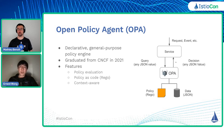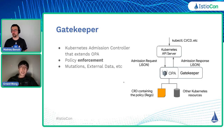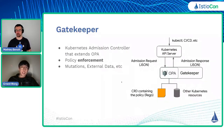Let's look at the relationship between OPA and Gatekeeper. Gatekeeper is a Kubernetes admission controller that extends OPA, and it is responsible for policy enforcement based on the evaluation results from OPA. An admission controller intercepts admission requests to the Kubernetes API server, giving us an opportunity to evaluate objects being admitted into our clusters against a set of policies using OPA. We can enforce different actions if certain objects violate our organization's policies.